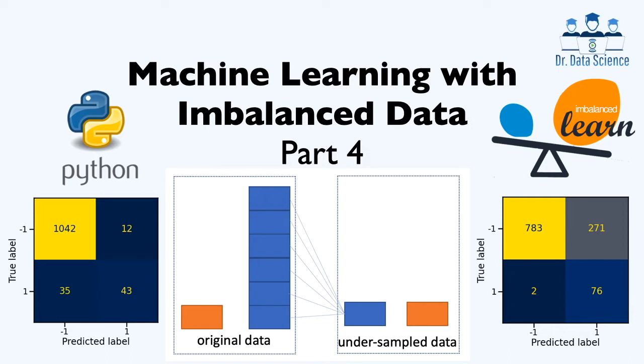For example, in the binary classification problem on the fly route dataset, the minority class is the positive class and the majority class is the negative class. If we apply standard machine learning algorithms, they are likely to predict most labels as negative or the majority class, giving us misleading accuracy results.